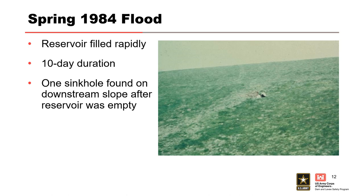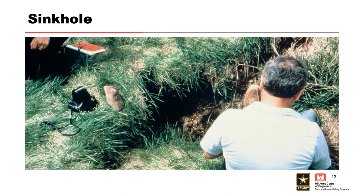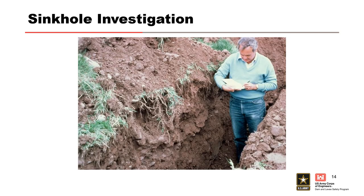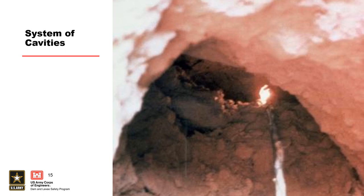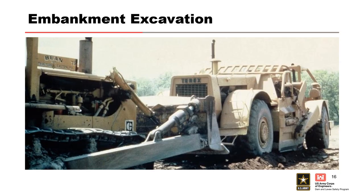A large flood event rapidly filled the reservoir behind Broadhead Dam on April 18, 1984. On May 4th, a large sinkhole was observed at Station 4+13 on the downstream side of the embankment about 160 feet downstream of the centerline. The sinkhole was about 6 feet in diameter and 4 feet deep. The sinkhole was investigated using a backhoe. That excavation revealed a large system of cavities, with some of the cavities being horizontal in nature. In response to these findings, excavation with heavy equipment was started to find the extent of the problem.